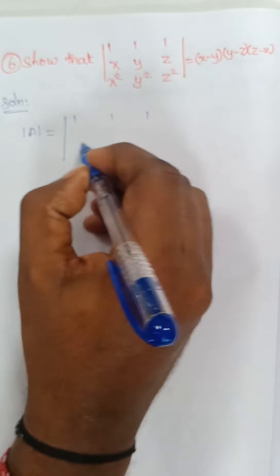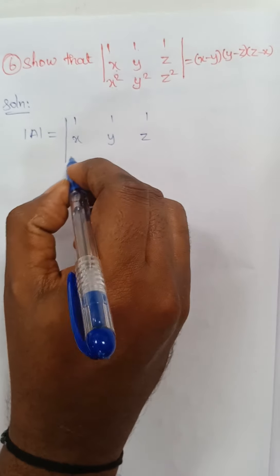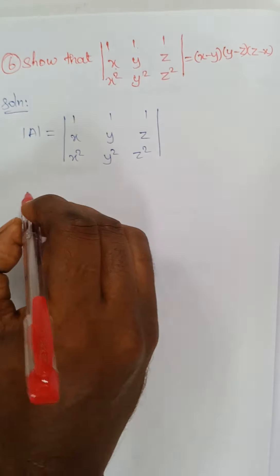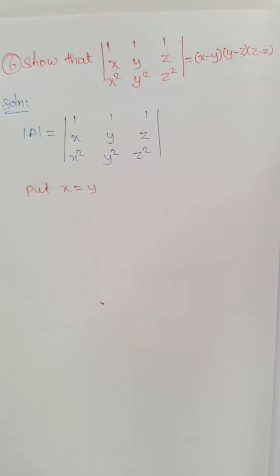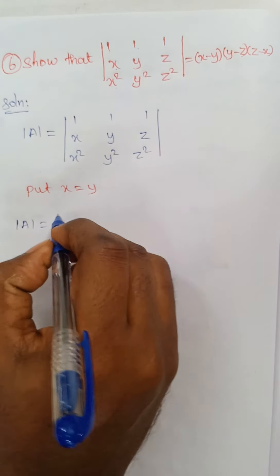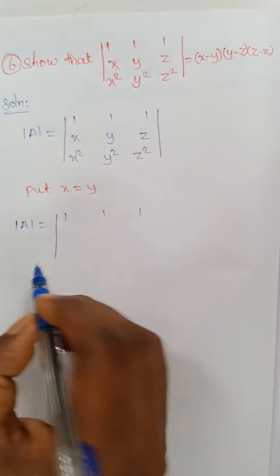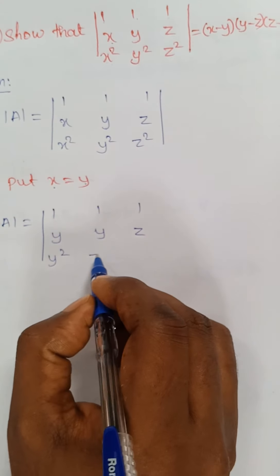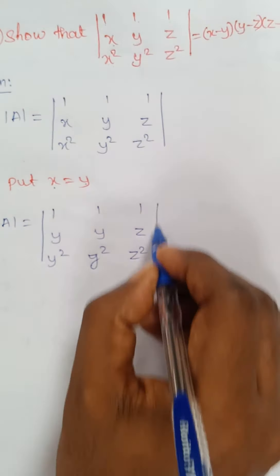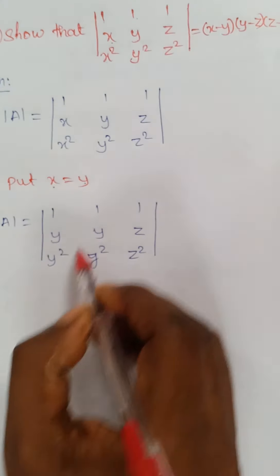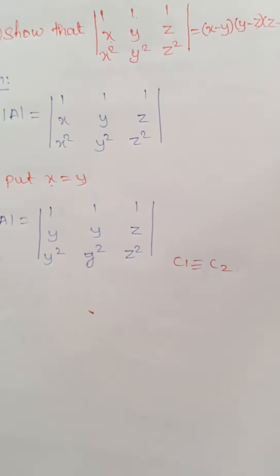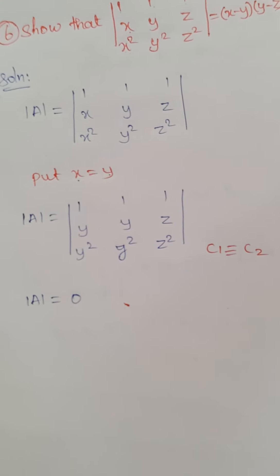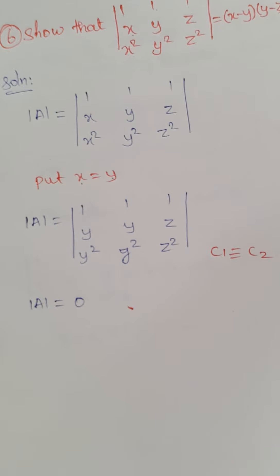The determinant of A equals the determinant of the matrix with rows [1, 1, 1], [x, y, z], [x², y², z²]. First, I am going to apply x equal to y. Putting x equal to y, the determinant becomes rows [1, 1, 1], [y, y, z], [y², y², z²]. Here column 1 and column 2 are identical — C1 is identical to C2 — therefore the determinant of A equals 0.